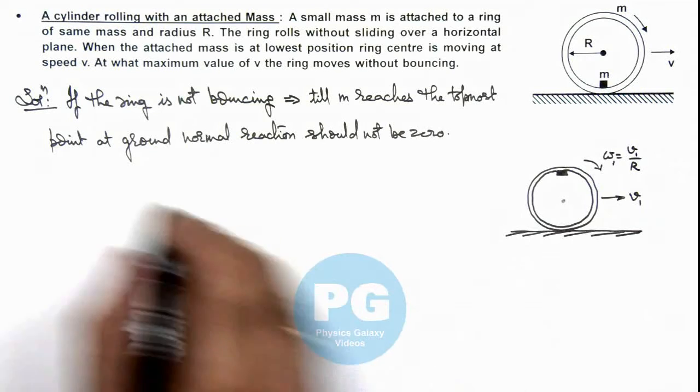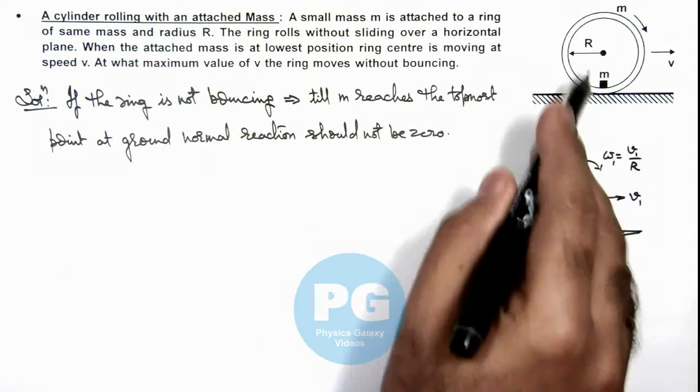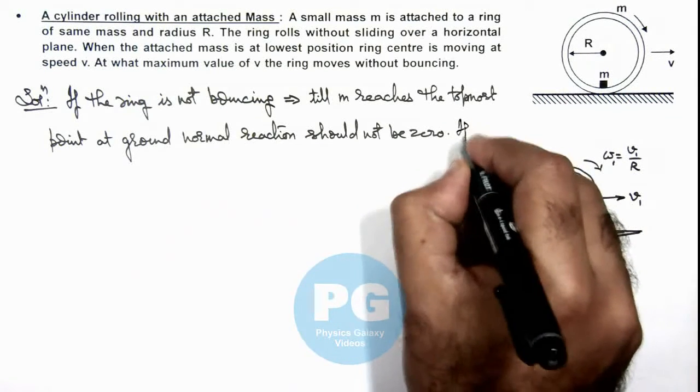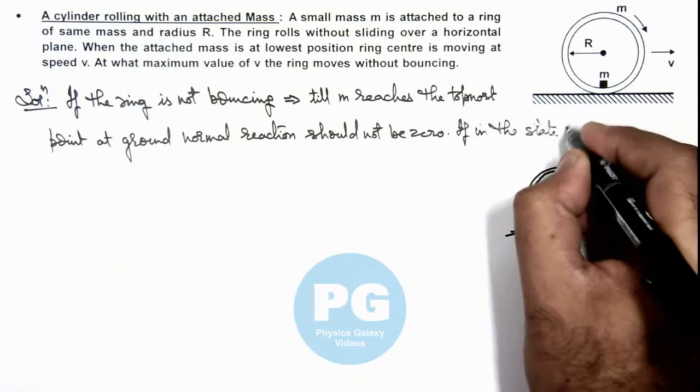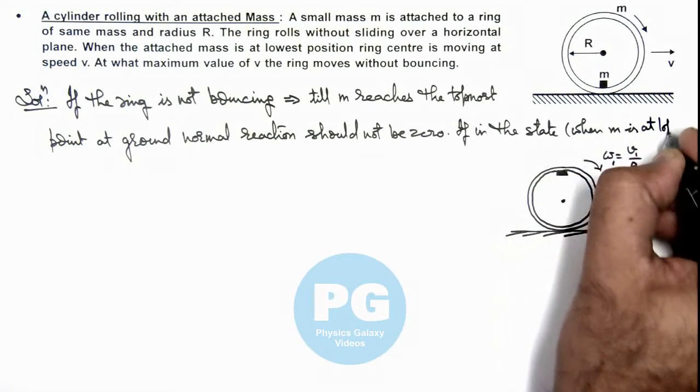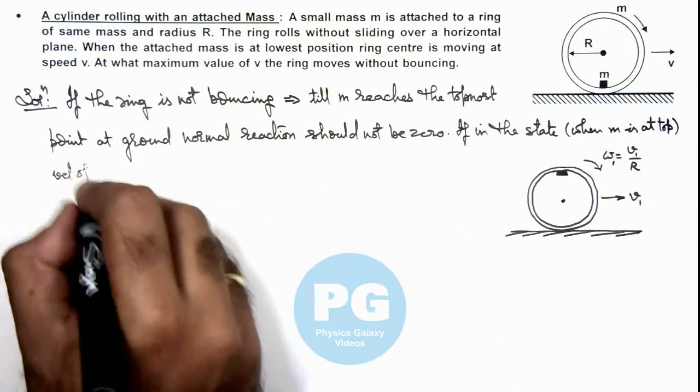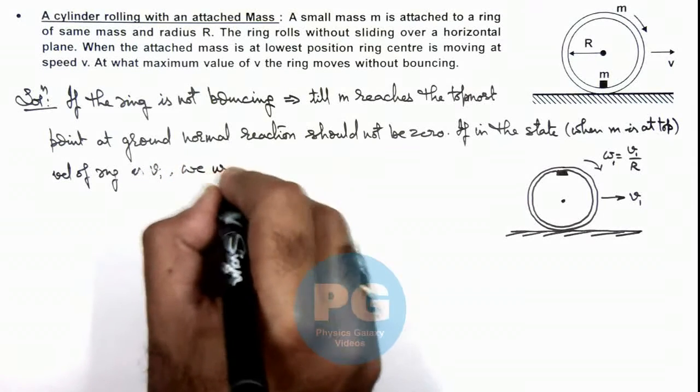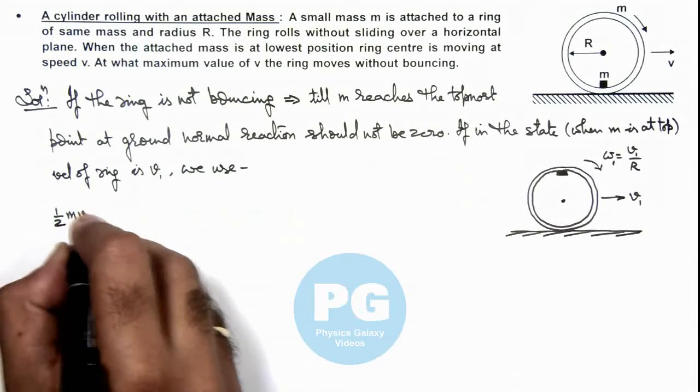In this situation we can write first the work energy equation to calculate the value of v1. In the state when m is at top, velocity of ring is v1, we use the initial kinetic energy we can write as half mR square, as half mv square.